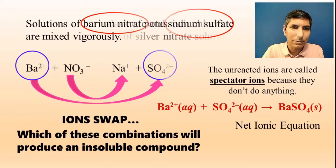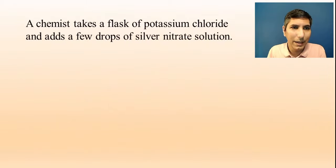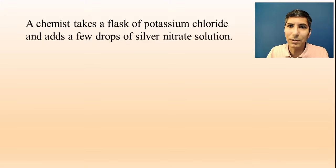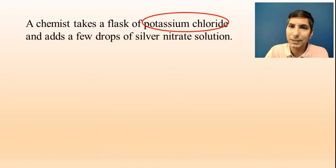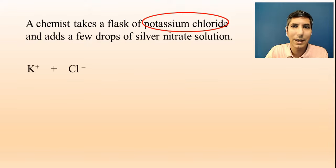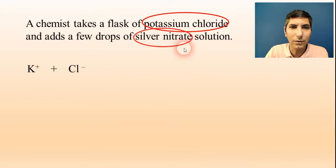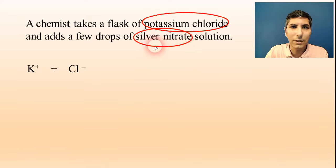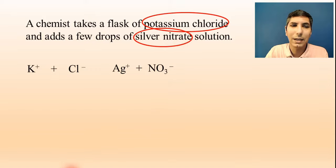Let's try another example. A chemist takes a flask of potassium chloride and adds a few drops of silver nitrate solution. We start with the first one, potassium chloride. That's soluble, so we have to write it in its ion form: K+ and Cl⁻. And then we have silver nitrate solution — that's in solution, so it's soluble. Silver nitrate would be Ag+ and then nitrate is NO₃⁻.